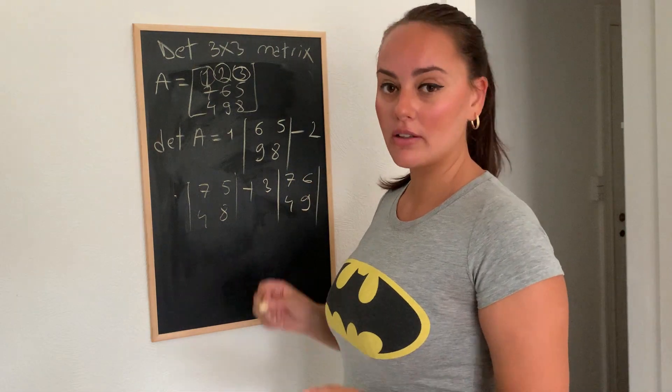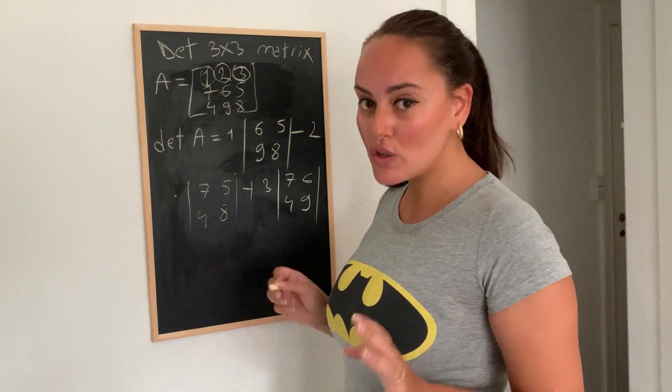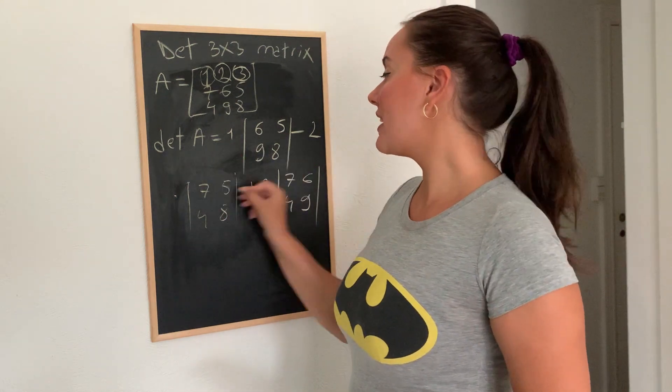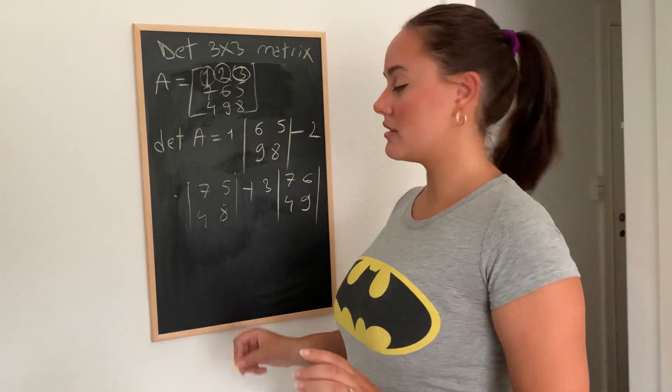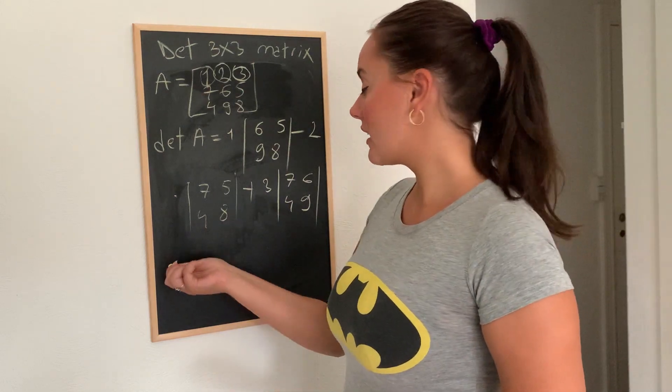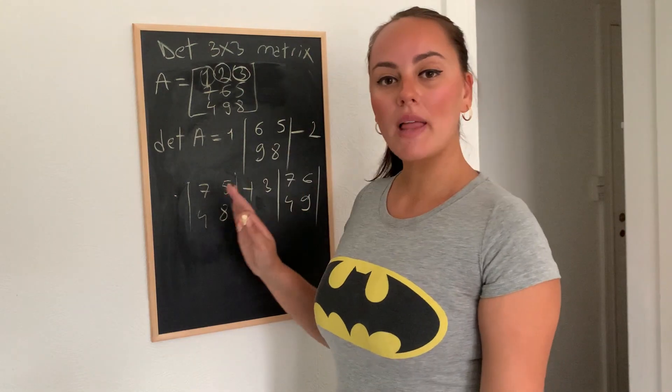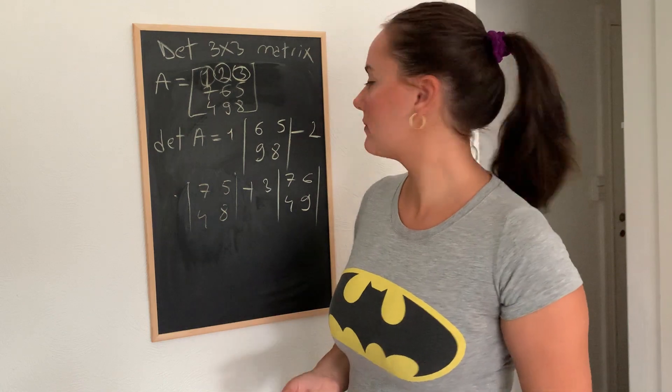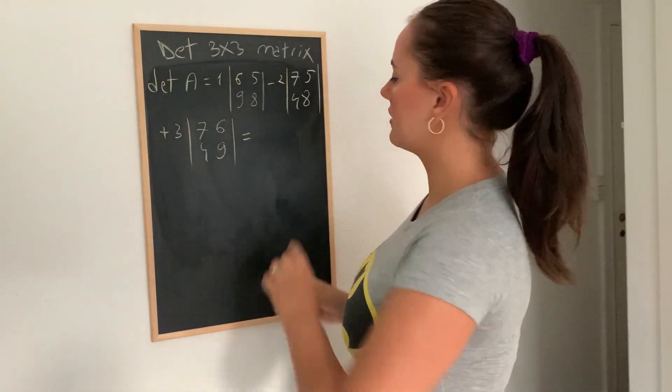Okay, now that we know how to calculate the determinant of a 2x2 matrix, it's going to be very easy to calculate this entire determinant. So let's take it one at a time. I'm just going to erase the blackboard so we have a clear calculation.